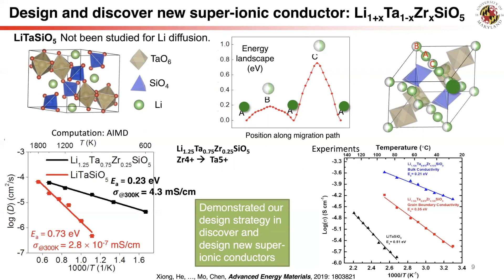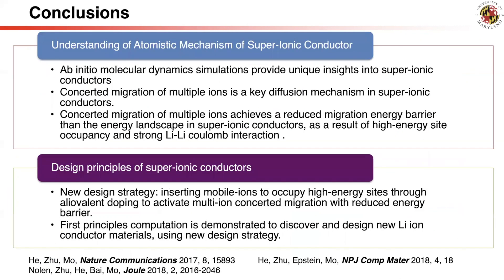In collaboration with Professor Hailong Chen from Georgia Tech, this material was demonstrated experimentally, and the high ionic conductivity was confirmed in agreement with the computational prediction. You can check out this work in the Advanced Energy Materials paper below. This is an example of a fully computation-predicted lithium-ion conductor system. I hope you enjoyed this video — you can learn more about this study in our paper and other related readings below. Thank you.